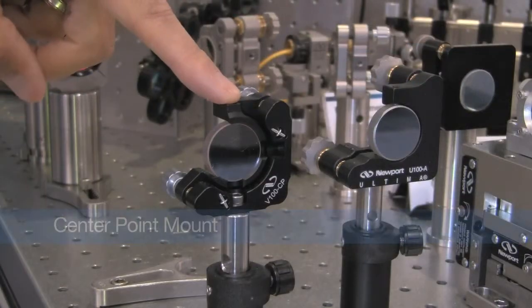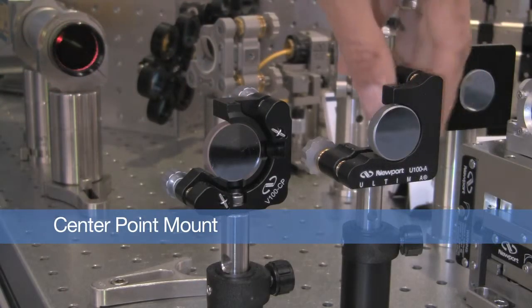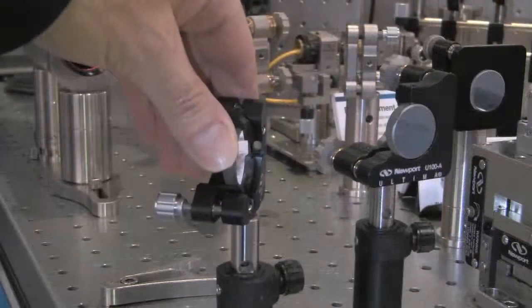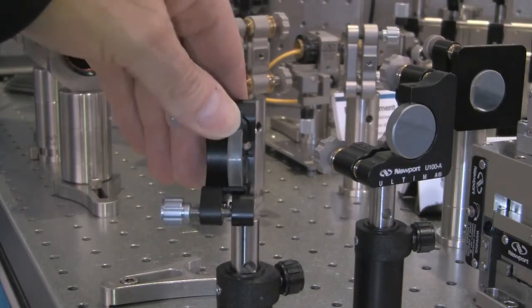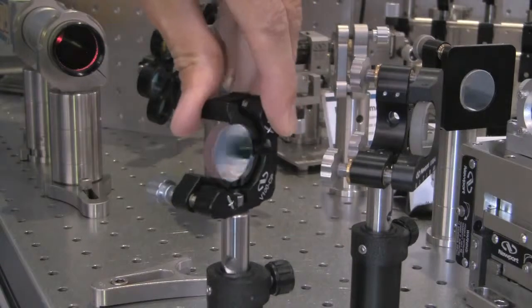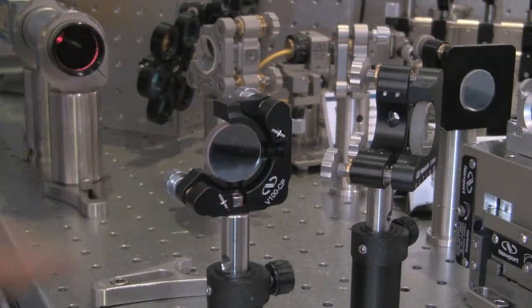This is the new center point mount. The major difference between this mount and standard mounts is that on a standard mount, you're mounting to the post behind the optic, whereas on the center point mount, your mounting is directly under where the optics sit. This allows you to rotate the mount about this center line and not lose your beat.